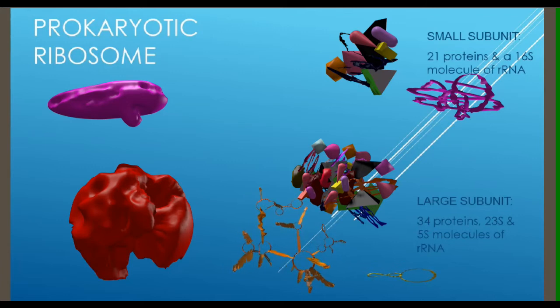In eukaryotes, the ribosomes of mitochondria and chloroplasts can resemble those of prokaryotes. Eukaryotic ribosomes vary from 55S to 66S in animals, and 70S to 80S in plants and fungi.